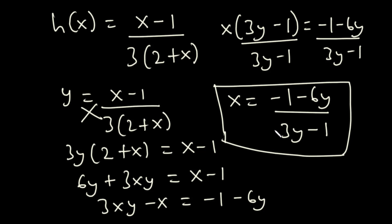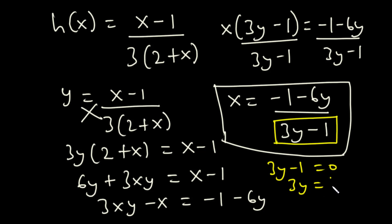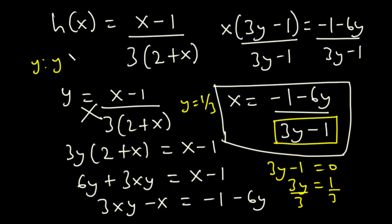Now, to find the range, we need to equate the denominator to 0. So 3y minus 1 is equal to 0. Transposing negative 1 to the right-hand side, we have 3y is equal to 1. Dividing both sides by 3, we get y is equal to 1 over 3. This means that if we insert y equal to 1 over 3 into the equation, it will make the denominator go to 0, making the whole function undefined. So the range for the function is y such that y is the set of all real numbers except y is equal to 1 over 3.